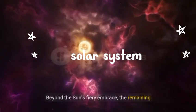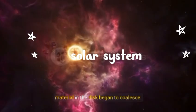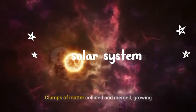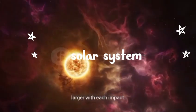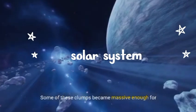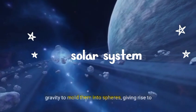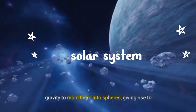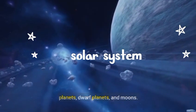Beyond the sun's fiery embrace, the remaining material in the disk began to coalesce. Clumps of matter collided and merged, growing larger with each impact. Some of these clumps became massive enough for gravity to mold them into spheres, giving rise to planets, dwarf planets, and moons.